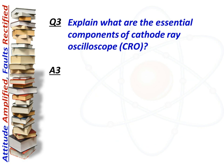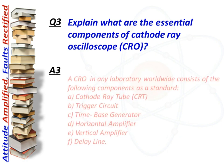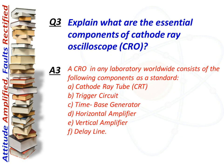Next question: what are the essential components of a cathode ray oscilloscope? Answer: A CRO in any laboratory worldwide consists of the following standard components: cathode ray tube, trigger circuit, time-based generator, horizontal amplifier, vertical amplifier, and delay line.